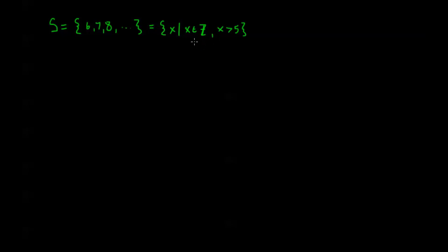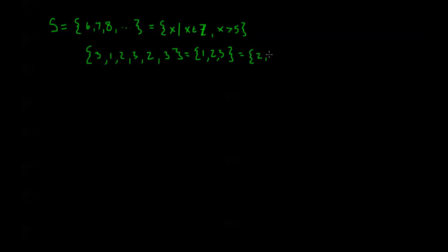Also keep in mind that order and repetition are not specified when we're talking about a set. So in other words, the set {3, 1, 2, 3, 2, 3} is equal to the set {1, 2, 3}. Order is not specified when we talk about a set — this is also equal to the set {2, 3, 1}, for example. All that we mean by a set is a collection of objects, and the elements of that set are the specific objects we're talking about in that set.